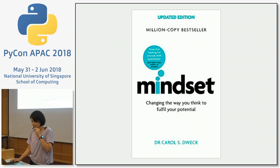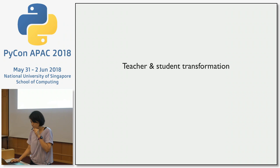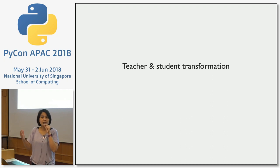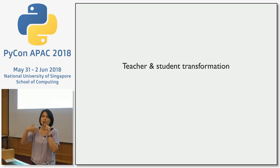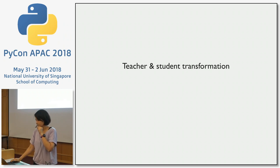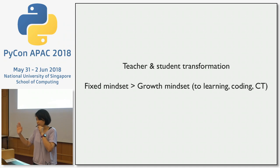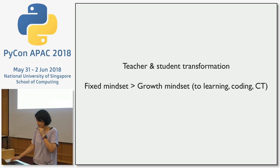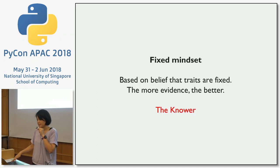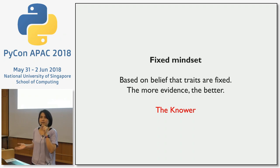According to Carol Dweck, mindset involves not only the student's transformation but also the teacher's transformation. The teacher's mindset will subsequently influence the teacher's attitudes and communication, which will then influence the student's attitudes and learning process. It is a transformation of both teacher and student from a fixed mindset into a growth mindset. A fixed mindset is based on the belief that traits like intelligence and skill are fixed — everyone has a particular capacity for intelligence, and once you've reached it, you're fixed.